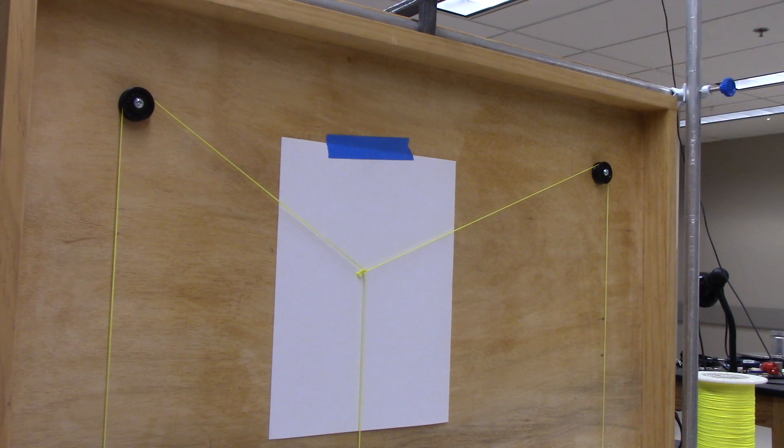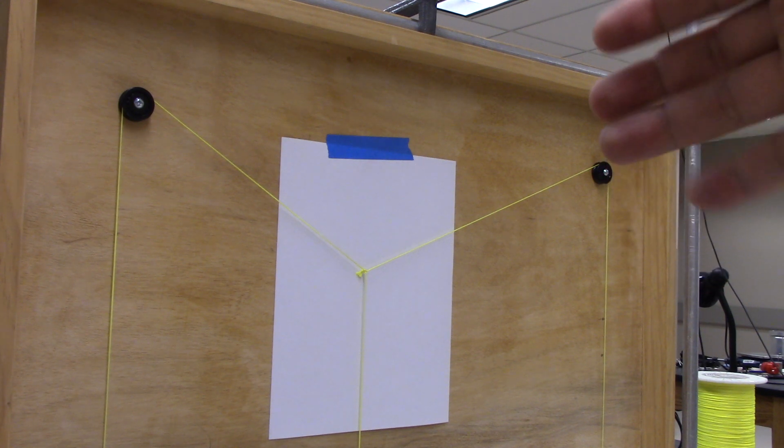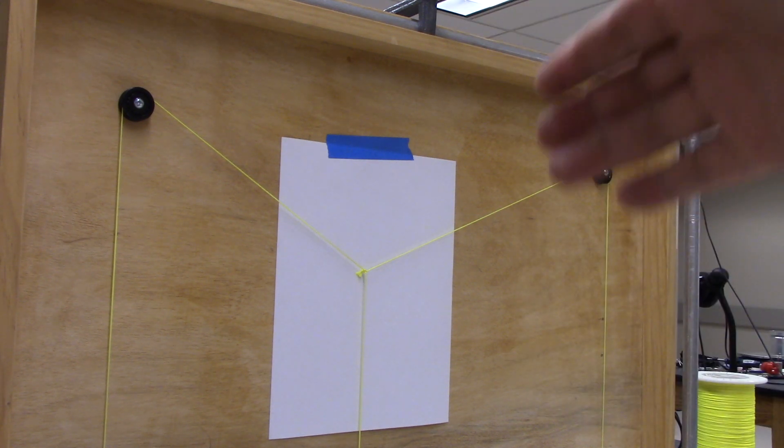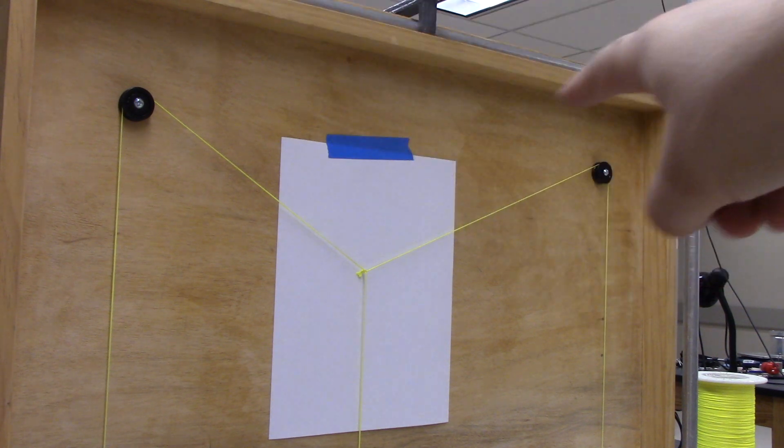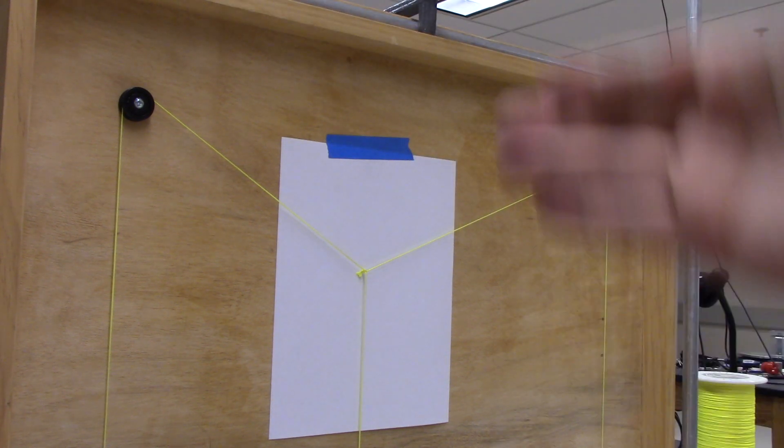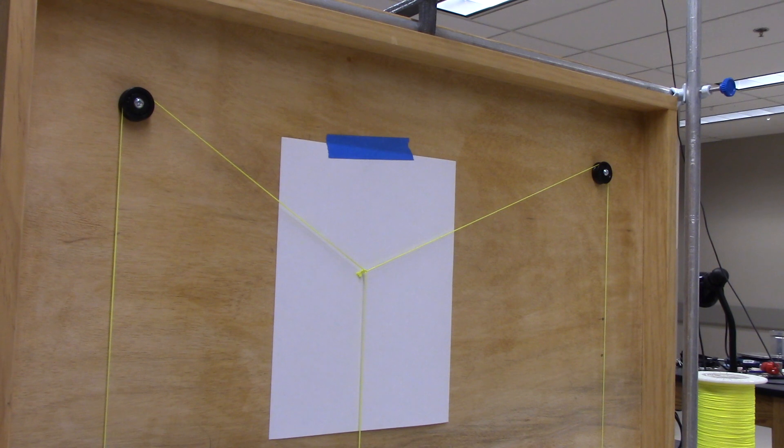So you'll get one that goes straight down and one up at an angle to each side, and then that doesn't give you the magnitude of the force.